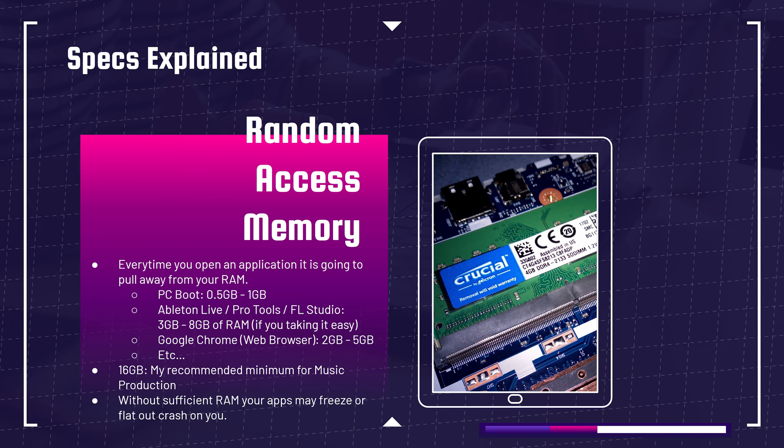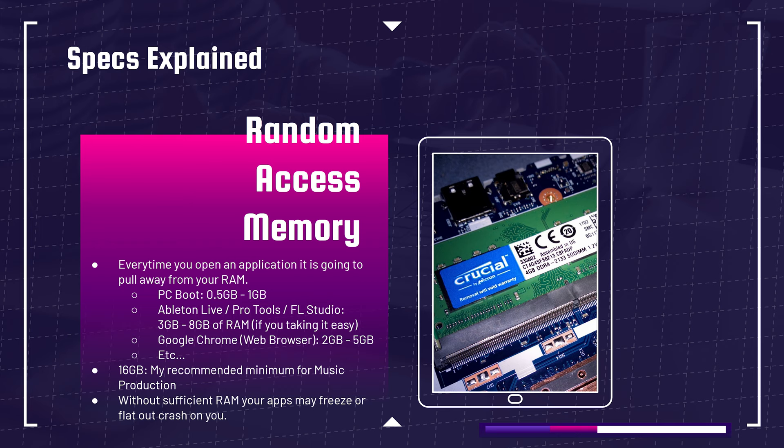Moving on to RAM — random access memory. Every time you open an application, it pulls from your RAM. For instance, if you have 8GB of RAM, I don't recommend that for music production — I recommend at least 16. But say you have 8: as soon as you boot your PC, you'll use anywhere from half a gig to a full gig just to run it.